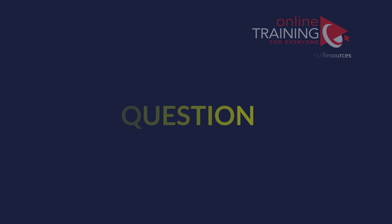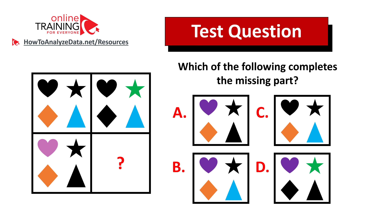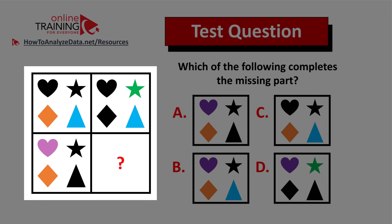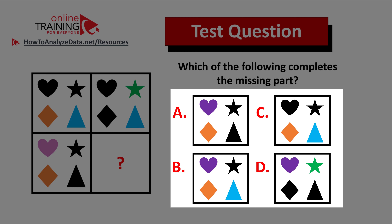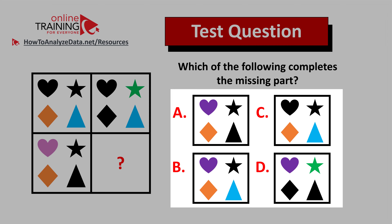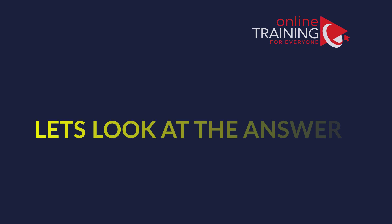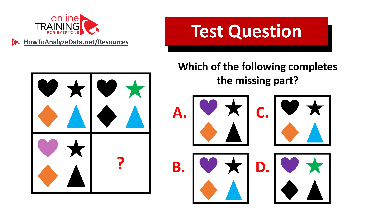Let me share with you a tricky question which tests your reasoning, analytical, as well as visualization skills. Which of the following completes the missing part? You're presented with a two-by-two box — one of the squares in the big box is missing — and you have four different choices: A, B, C, and D. Take a closer look and see if you recognize the pattern. Now might be a good time to pause this video and give yourself 10 or 20 seconds to come up with the answer.